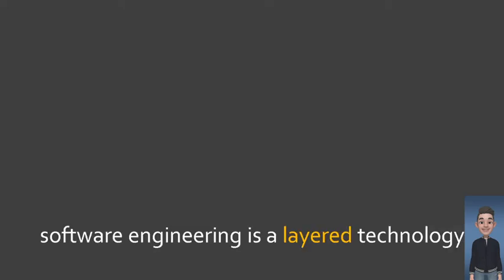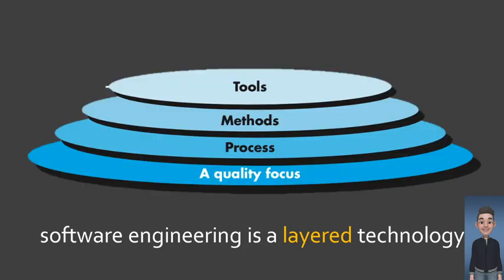So what is software engineering based on Pressman's book? Software engineering is a layered technology. Software engineering encompasses a process, a collection of methods or practices, and an array of tools that software professionals use to build high-quality software. I will explain the figure in the next slides.